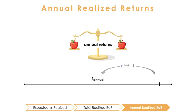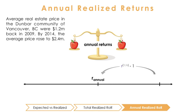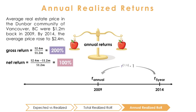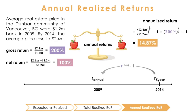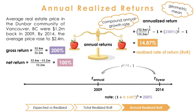For example, average real estate prices in Dunbar back in 2009 were $1.2 million. In 2014, they were $2.4 million — a 200% gross return or 100% net return. But what was the return on an annualized basis? Investors would have earned an annual realized return of (2.4 / 1.2) to the power of 1/5 minus 1, which equals 14.87%. Note that multiplying (1 plus this annual return) n times, or raising it to the power of n, gets us back to the total holding period return. We refer to this annualized rate as the realized rate of return, or ROR — also commonly referred to as the compound annual growth rate, the geometric mean, or the time-weighted return.